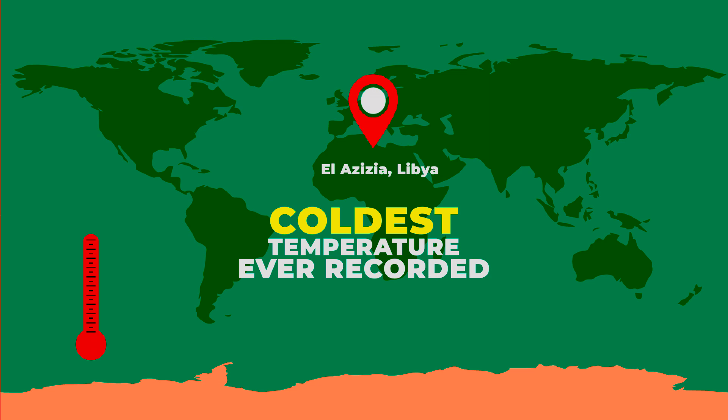And the coldest temperature ever recorded on Earth is in Vostok Station of Antarctica. It plunged to a scary cold negative 89.2 degrees Celsius.